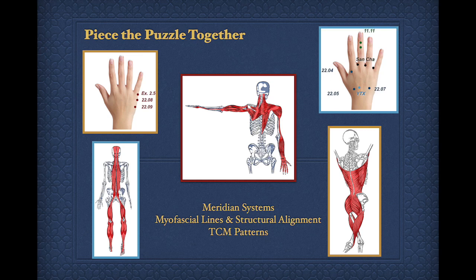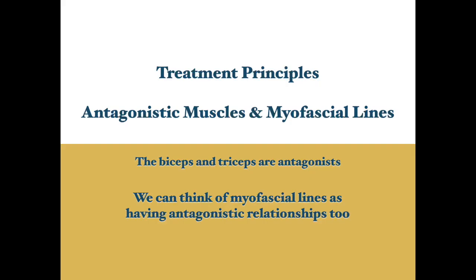Let's go ahead and get started. I want to share a lot of information with you tonight, but there's one key concept I want you to consider as we talk about this, because this is really important for treating neck conditions, shoulder conditions, pain in general, the hips, the low back, and structural conditions with misalignments. This treatment principle involves understanding and working with antagonistic muscles.